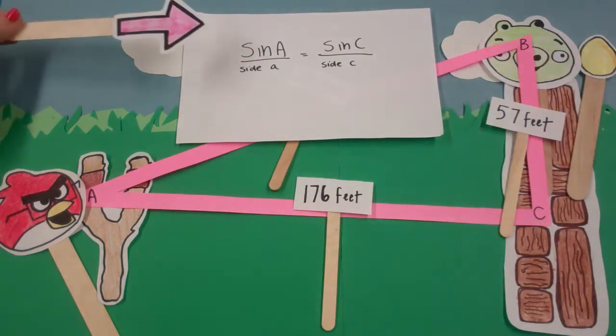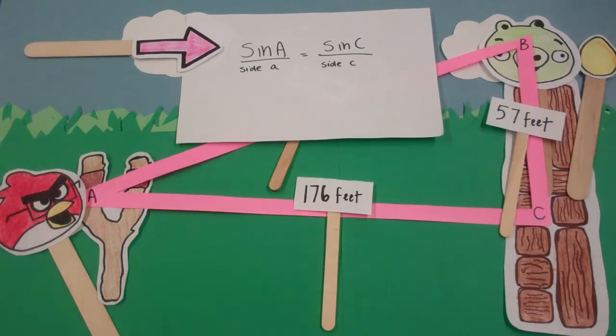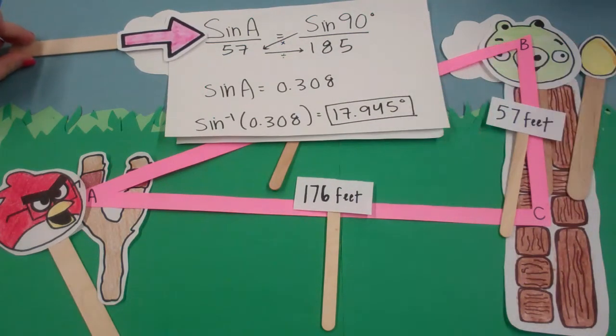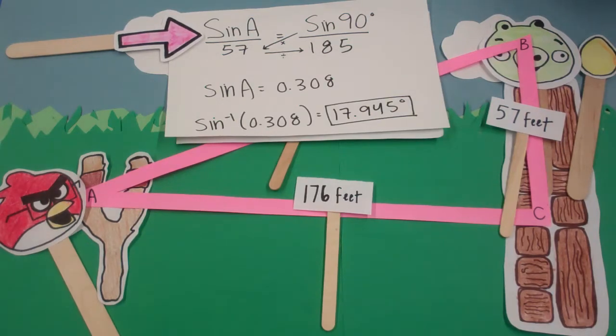The Angry Nerd remembers that sine of A over side A is equal to sine of C over side C. Plugging in what he already knows, he sets up the equation sine of A over 57 feet equals sine of 90 degrees over 185 feet. The next step is to cross-multiply sine of 90 by 57 and then divide by 185, isolating sine of A.